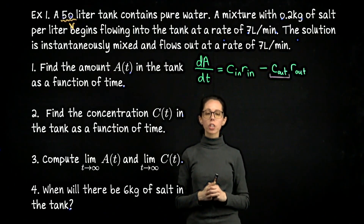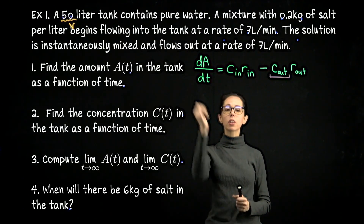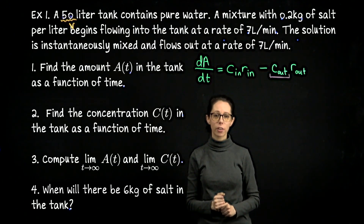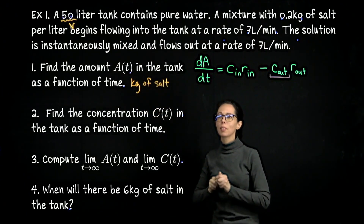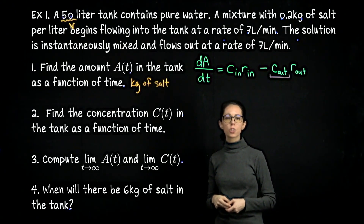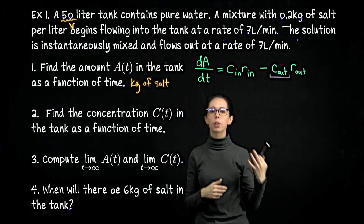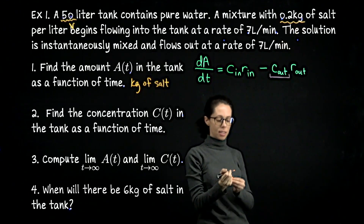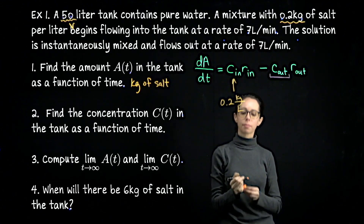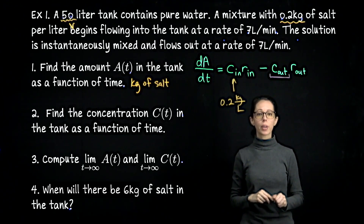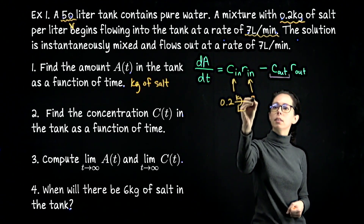The mixture coming in has 0.2 kilograms of salt per liter, so our amount A(t) will be in kilograms of salt. The concentration in is 0.2 kilograms per liter. The rate in and rate out are both 7 liters per minute. The concentration out requires more thought — it reflects the concentration of the entire tank due to instantaneous mixing, and it changes over time.